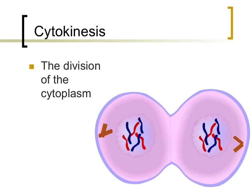Immediately after the division of the nucleus ends, the division of the rest of the cell occurs in a process called cytokinesis. This name is appropriate because the prefix cyto refers to the cytoplasm, which is everything in the cell other than the nucleus, and kinesis means movement or activity. Cytokinesis is the movement or activity that divides all of the cell, except for the nucleus. Note that cytokinesis is not part of mitosis, but it occurs very closely to the events of mitosis, so it was included here.